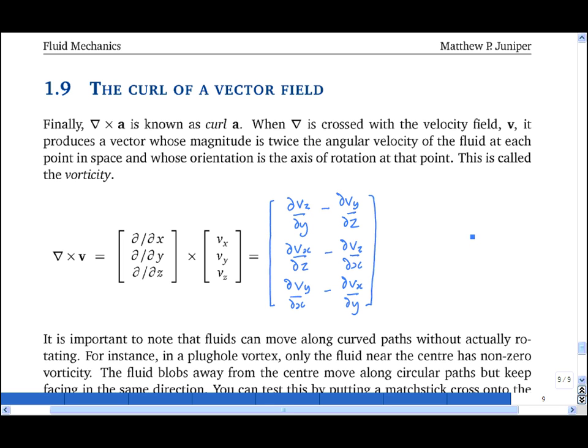And the physical interpretation is that if a fluid is rotating in space, then this vector, strictly known as a pseudo vector, points perpendicularly out of the plane of rotation and has magnitude that is twice the angular velocity of the fluid at that point in space. This is known as the vorticity vector.